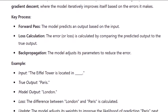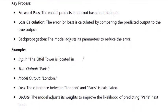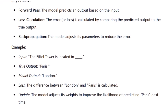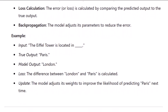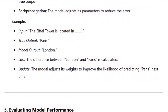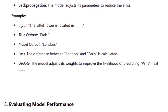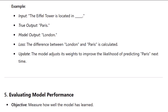Key processes include: forward pass, where the model predicts an output based on the input; loss calculation, where the error or loss is calculated by comparing the predicted output to the true output; and back propagation, where the model adjusts its parameters to reduce the error. Example — input: 'The Eiffel Tower is located in...' True output: Paris. Model output: London. Loss: the difference between London and Paris is calculated. Update: the model adjusts its weights to improve the likelihood of predicting Paris next time.